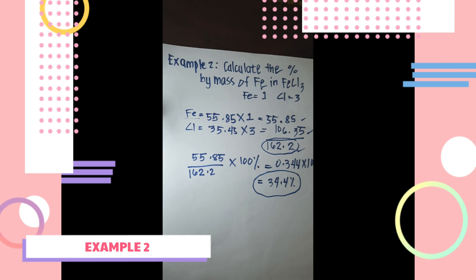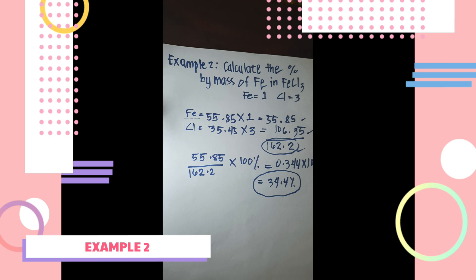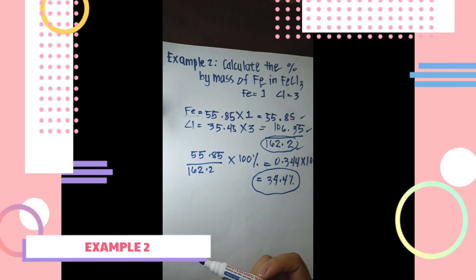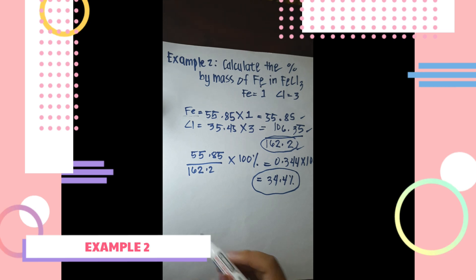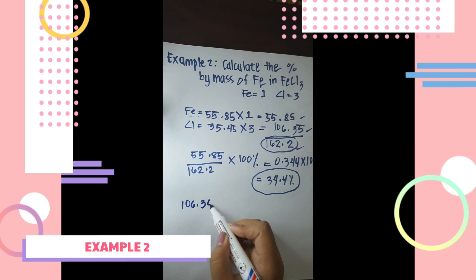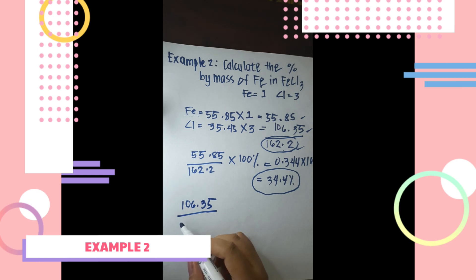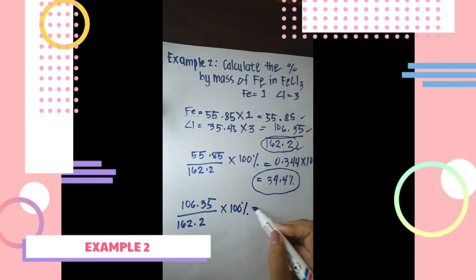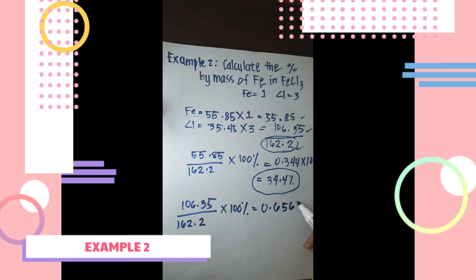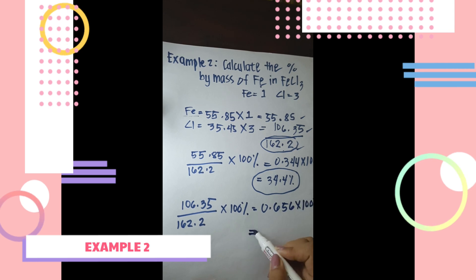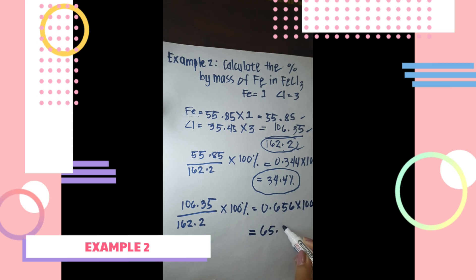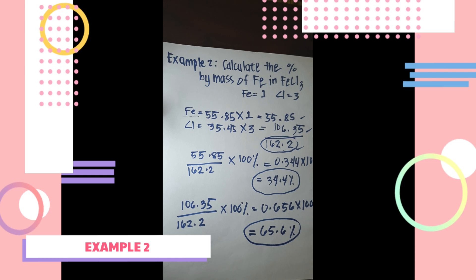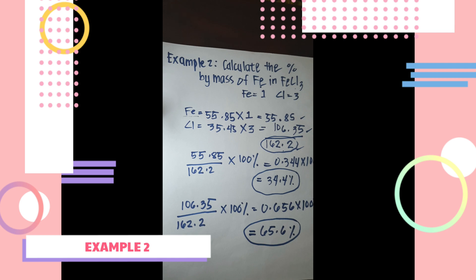Now let's find the percentage by mass of chlorine in FeCl₃. We already have the molar mass of chlorine, which is 106.35. So: 106.35 divided by the whole molar mass of the compound 162.2, multiplied by 100 percent, equals 0.656 multiplied by 100 percent. The final answer is 65.6 percent — that is the percentage of chlorine in the compound FeCl₃.